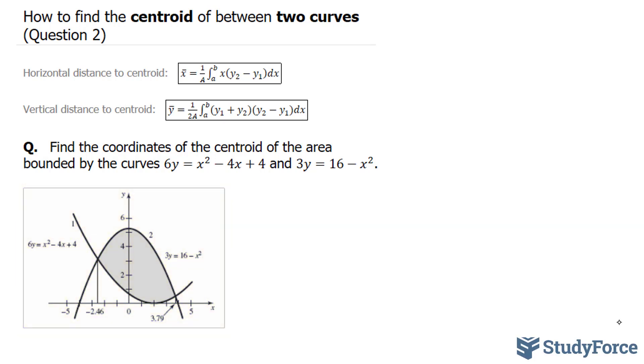What we have to do is find out where these two points intersect. Now, it's obvious from this graph that they intersect at negative 2.46 and positive 3.79, but I'm going to show you how to find that mathematically. What you want to do is treat these equations as if they were a system of equations, and just like how we solve for x and y with a linear system, we'll do the same thing here.